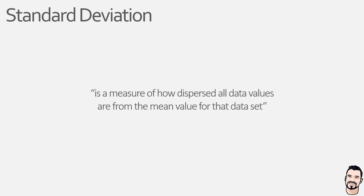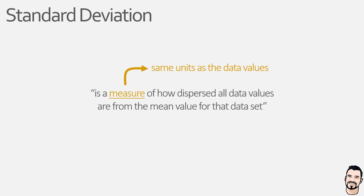Now this definition is similar to some other calculations which look at deviations, such as the variance of a population or sample. However, in the biological sciences standard deviation is often preferred because the calculated value for a data set's standard deviation is in the same units as the data itself, which means it can be used effectively during data visualisation. Quite often we will use the mean value to show the average value of a data set and the standard deviation to show how spread out the data is.